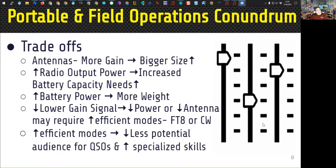With portable and field operations, there's a conundrum — there are trade-offs. If you want more antenna gain, you need a bigger antenna. If you want a very small portable antenna, you give up gain. If you want increased radio output power, you need a bigger battery, which means more weight. If you lower the gain and decrease power, you have to go to more efficient modes like CW, FT8, or FT4. Maybe SSB is out of the picture when you're down to half a watt with a small wire antenna. Going to increasingly efficient modes like FT8 reduces your potential audience since not everyone operates those modes, and CW requires more specialized skills. So there are trade-offs all the time in portable communication.